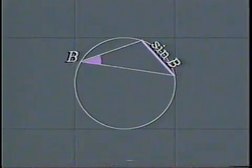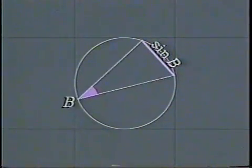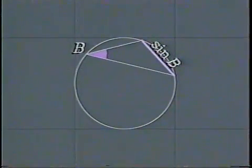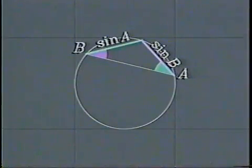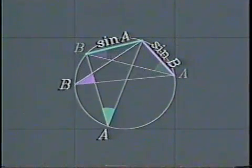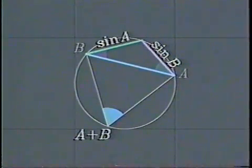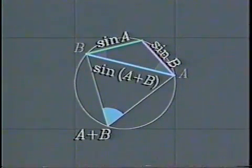Similarly, if this angle is B, the length of this chord is sine B, no matter where B lies on the circle. Now, bring the two angles together at a common vertex. They form a larger angle, A plus B, that cuts off a chord whose length is the sine of A plus B.